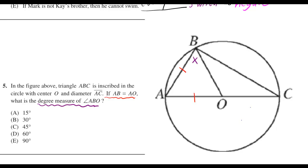In the figure above, triangle ABC is inscribed in the circle with center O and diameter AC. If AB is equal to AO, what is the degree measure of angle ABO?